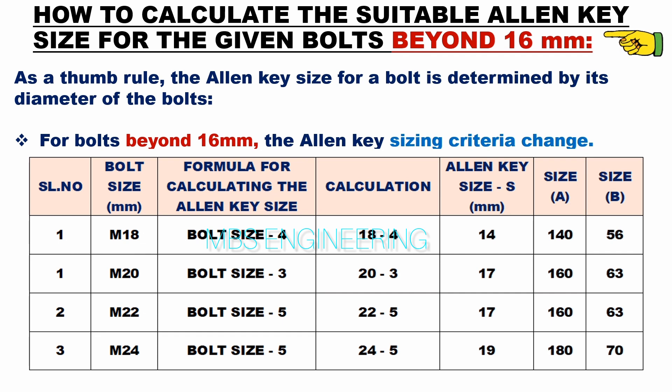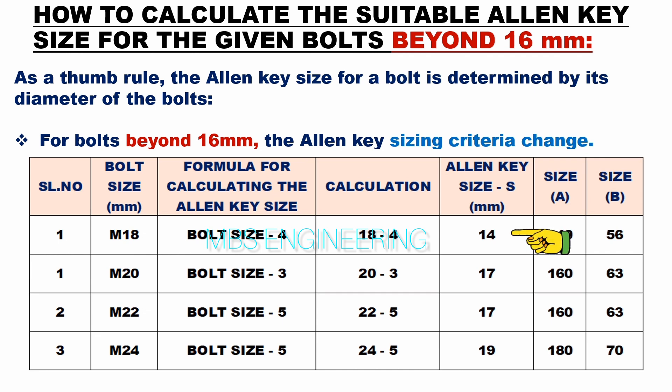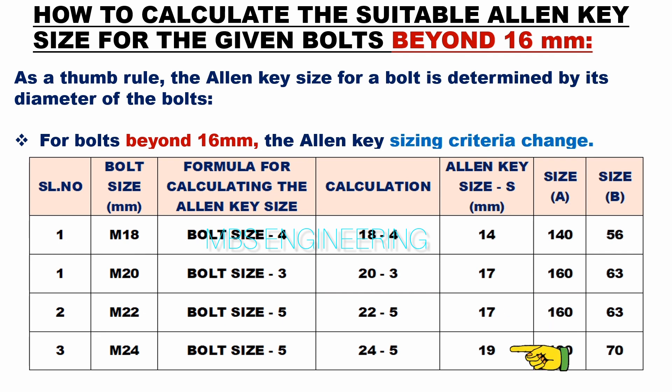We will understand how to calculate the suitable allen key size for bolts beyond 16 mm. For bolts beyond 16 mm, the allen key sizing criteria change. Based on the given data: M18 bolts allen key size is 14 mm; M20 bolts allen key size is 17 mm; M22 bolts allen key size is 17 mm; M24 bolts allen key size is 19 mm. Please also refer to the standard dimensions A and B for the allen keys.